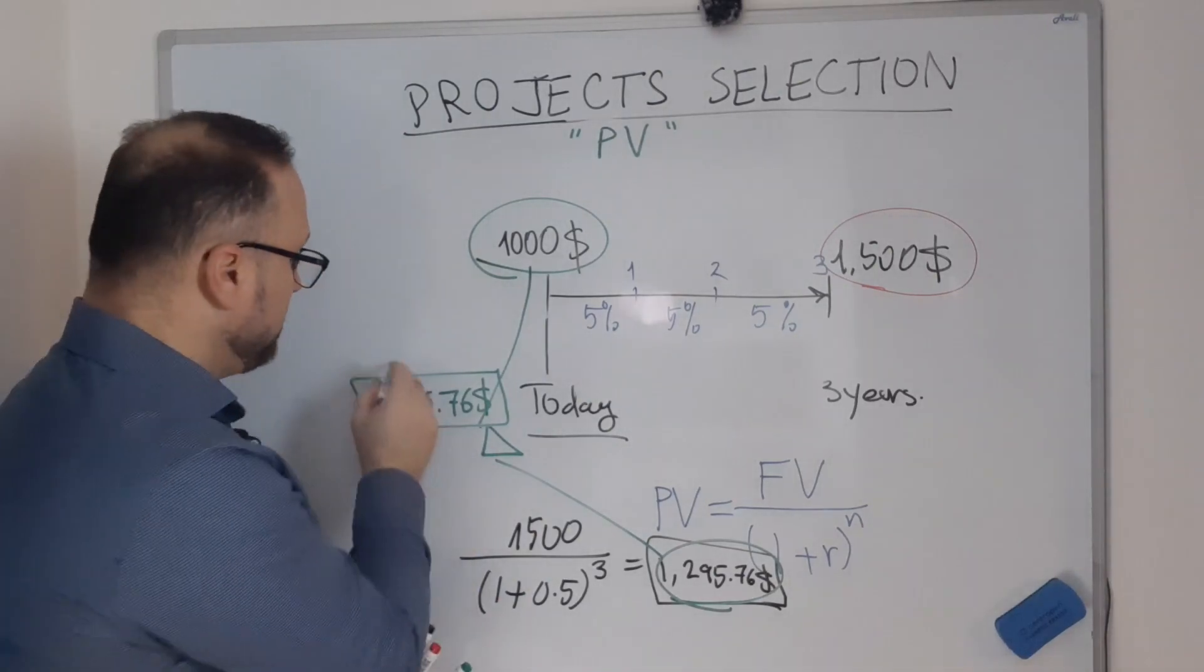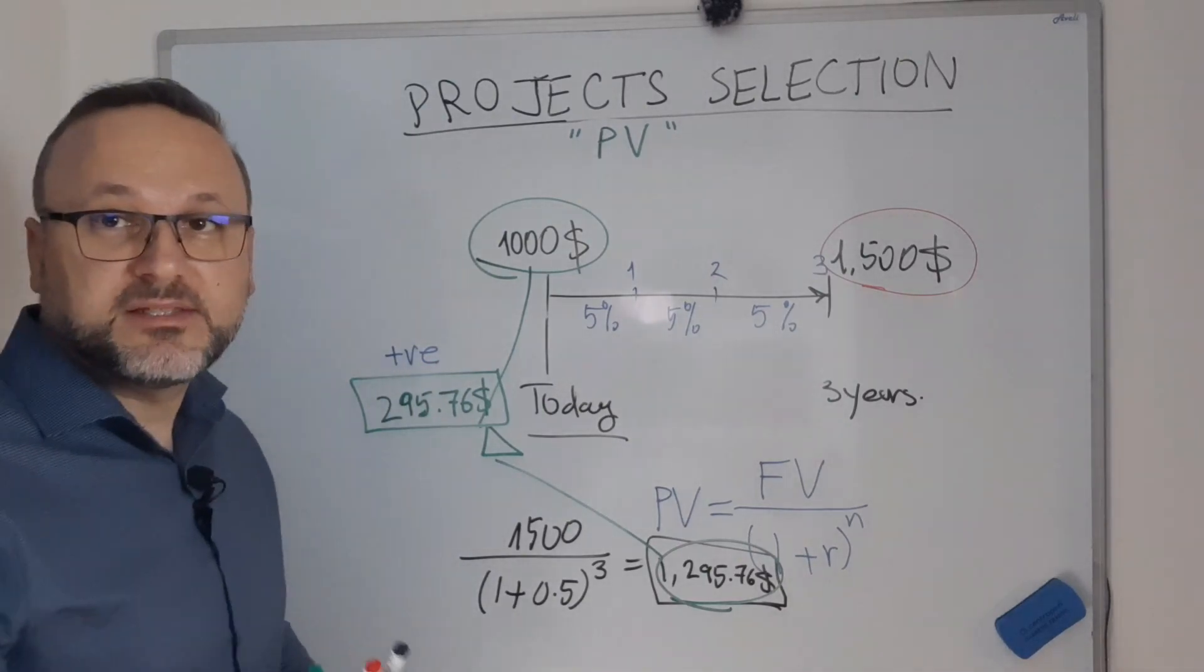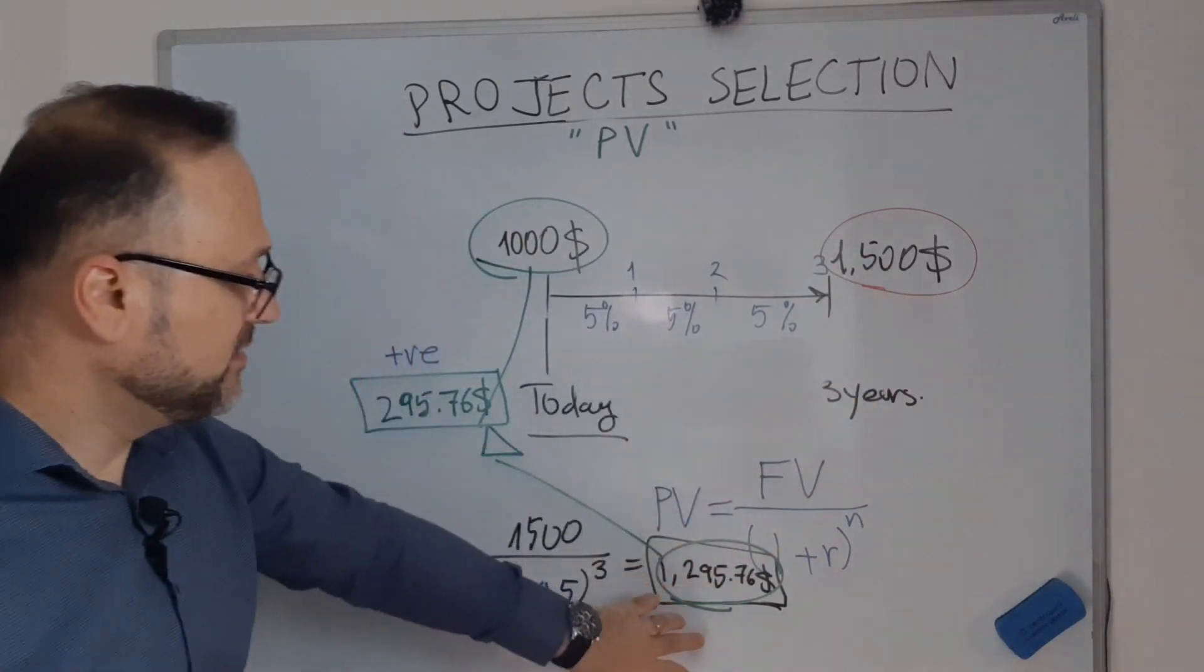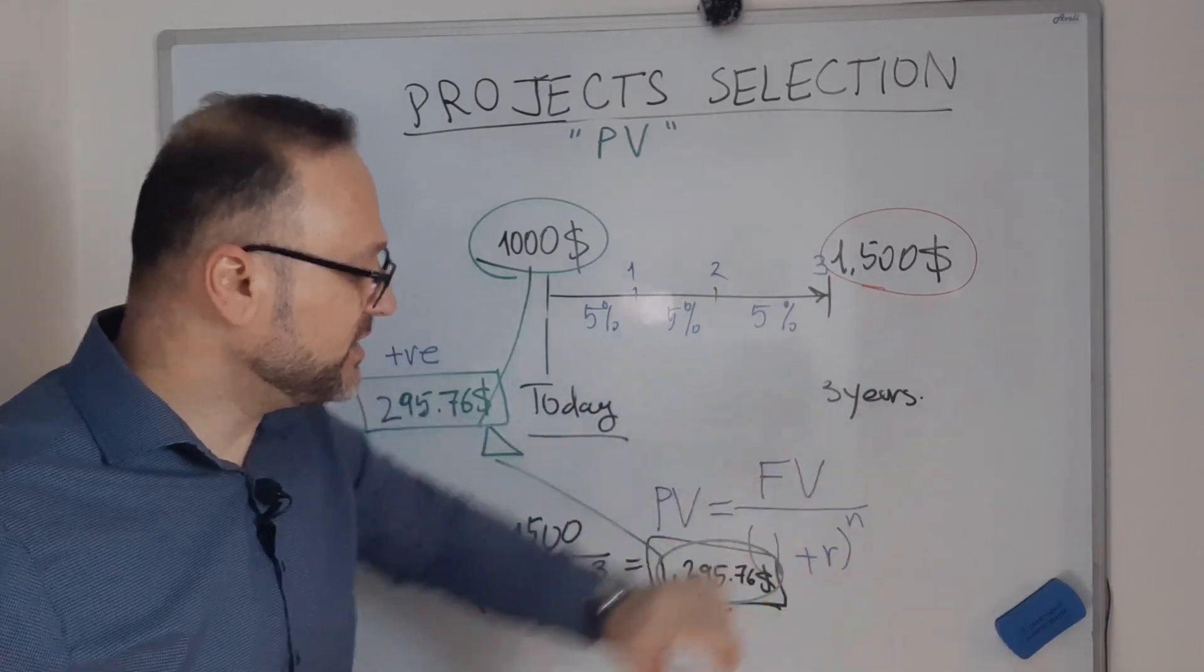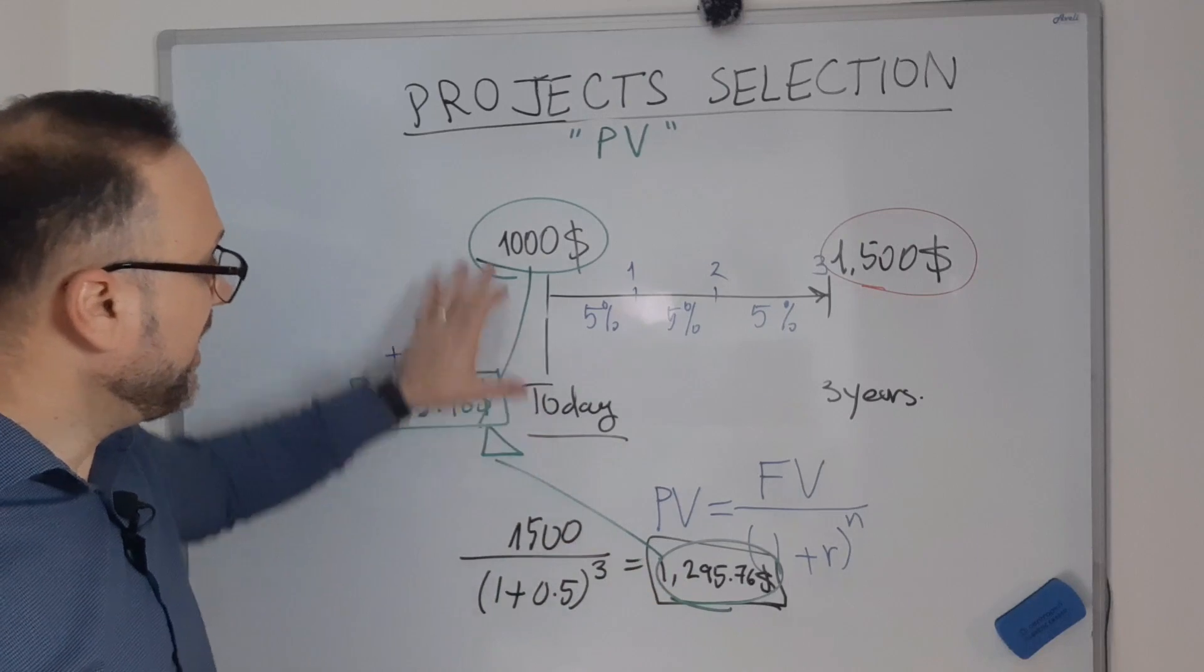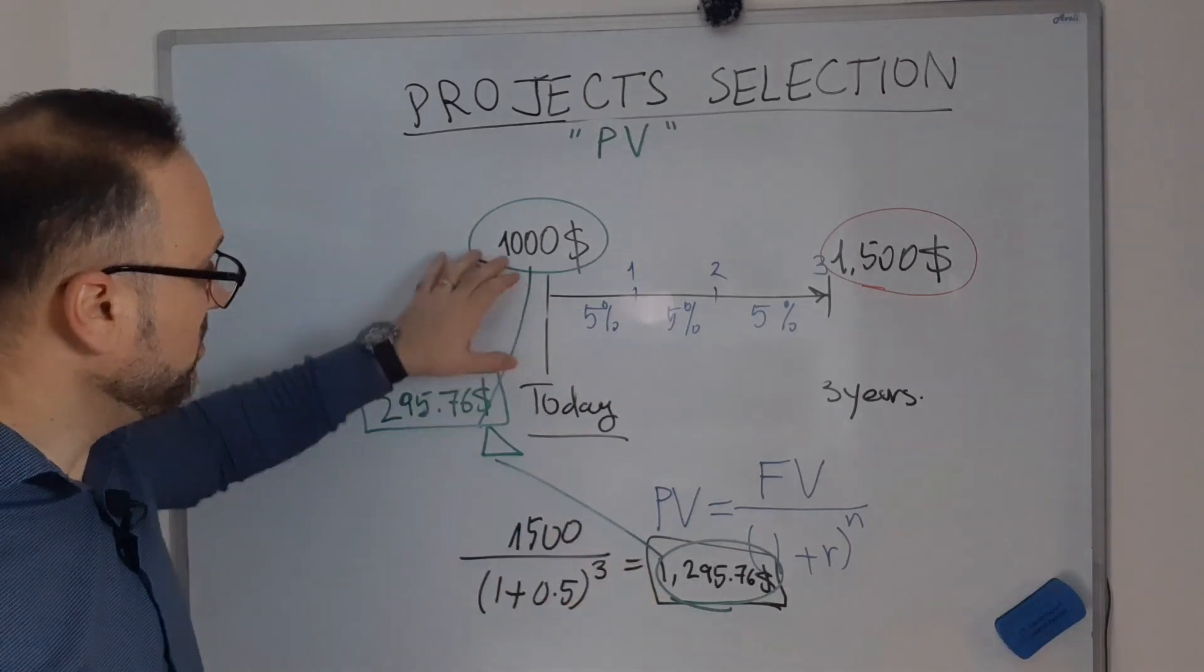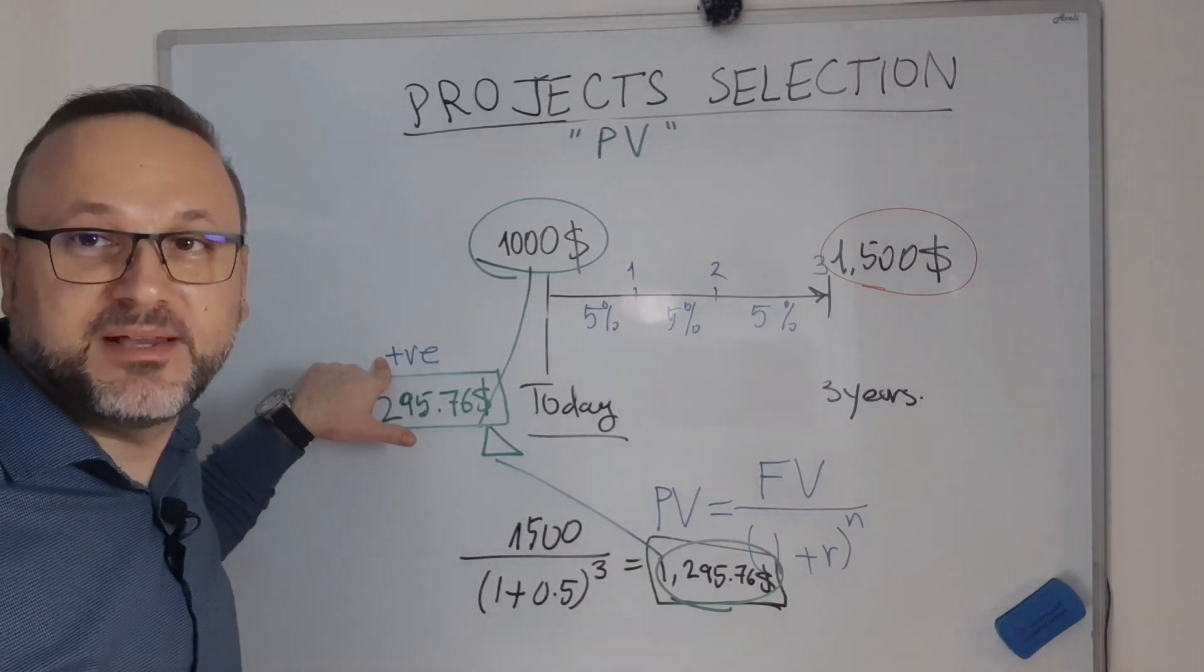This is positive. It's a positive value. That means my present value - the money I get from $1,500 within three years is valued $1,295, and the difference I am investing today is $1,000. So the difference is positive. That means the investment is worth it.